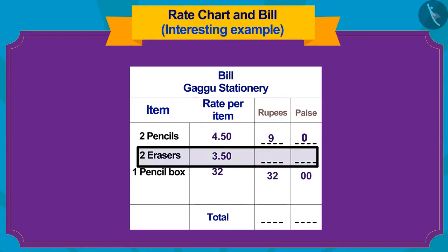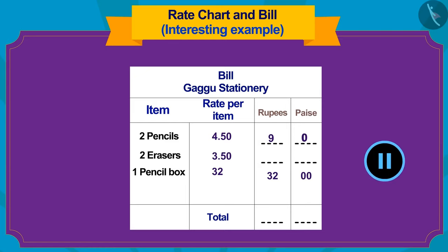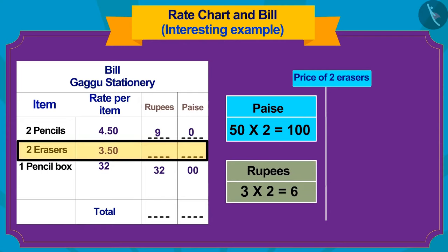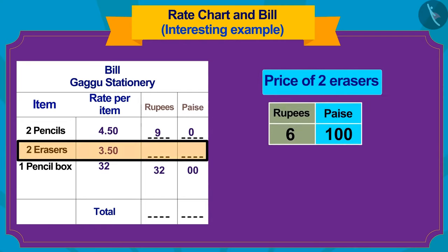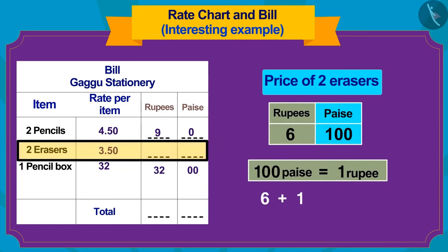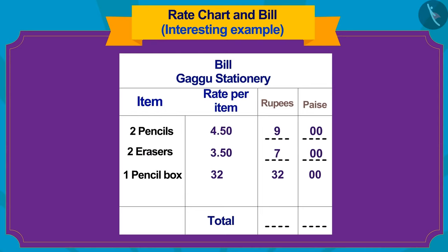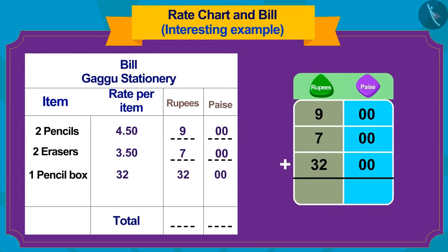Children, can you now find the price of two erasers and write it in the bill? You can pause the video and find the answer. Well done, kids! You have found the answer right! Now how will we find the total cost of goods? If we add 9, 7, and 32 rupees, the total items will be priced at exactly 48 rupees.